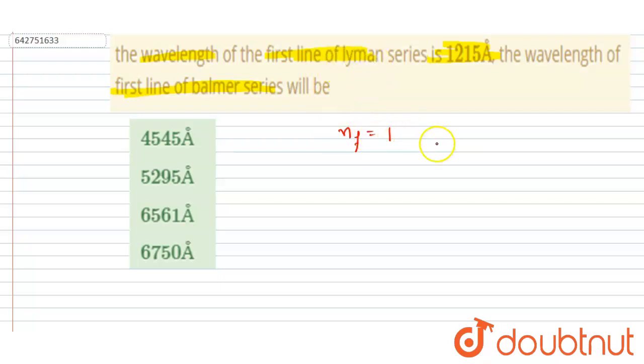For all Lyman lines, n_final will be equal to 1. Since this is the first line, n_initial I will write 2. So the transition from 2 to 1 would be the first line of Lyman series. I will write λ_L equals...